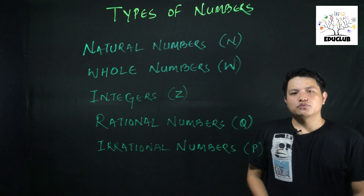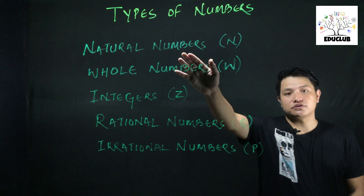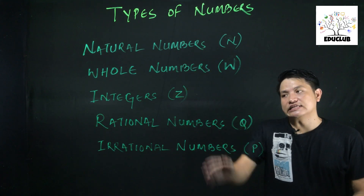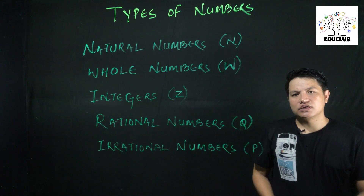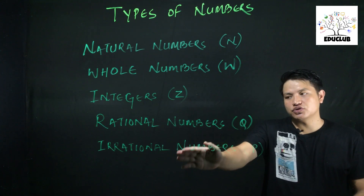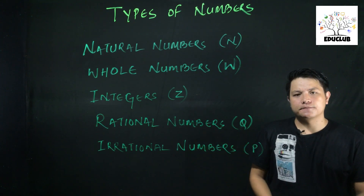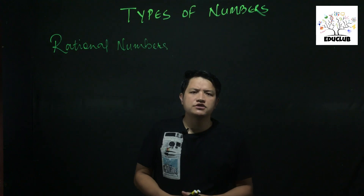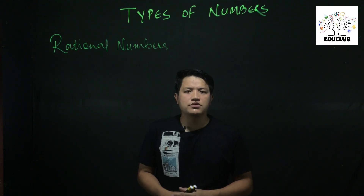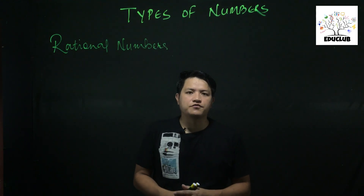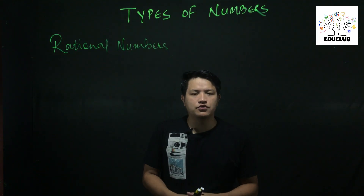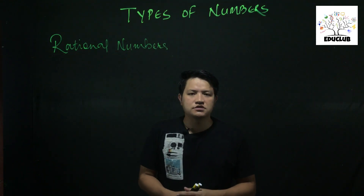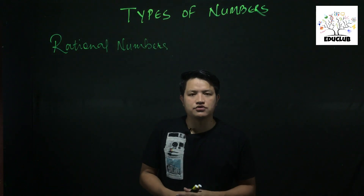Types of Numbers Part 1 video covered Natural Numbers, Whole Numbers, and Integers. Now we are talking about Rational Numbers and Irrational Numbers. The textbook definition: a rational number is a number which can be expressed in the form of p by q, where p and q should be integers and q is not equal to zero.